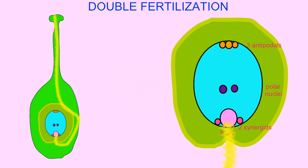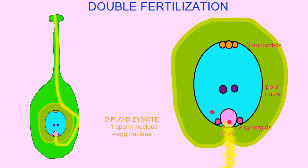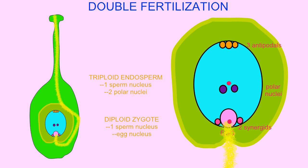The pollen is binucleate — there are two sperm nuclei inside the pollen tube. One of these fertilizes the egg to produce the diploid zygote. The other will fuse with the two polar nuclei to produce the triploid endosperm, which will provide nutrition for the embryo.